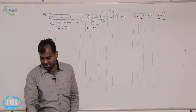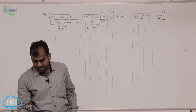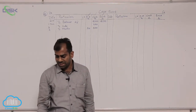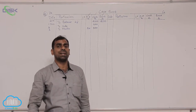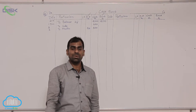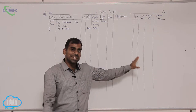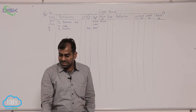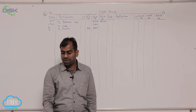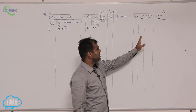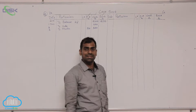Let us move on to the next transaction which is on 14th. On 14th you have a transaction: issued check to Hurry. The meaning of issued check to Hurry is the business has given a check to Hurry, so it is a payment. Any payment we have to record on the credit side. There is also discount received along with this transaction, so we will be using the discount received column for recording discount and the bank column for recording the check amount.